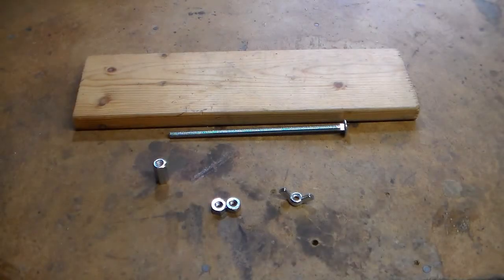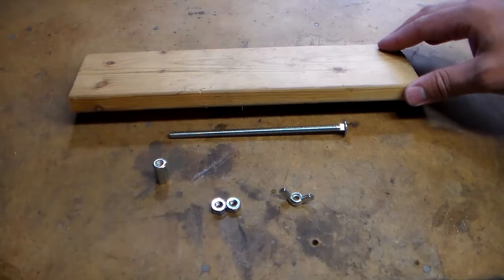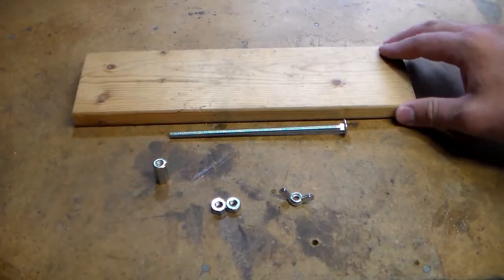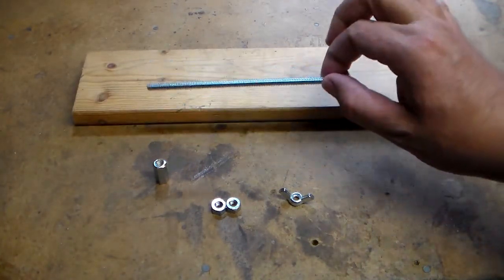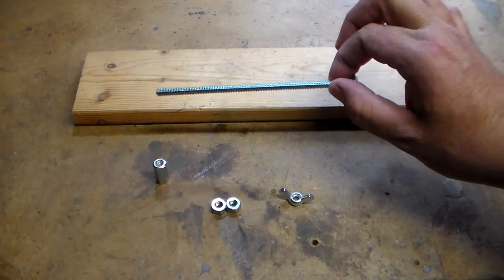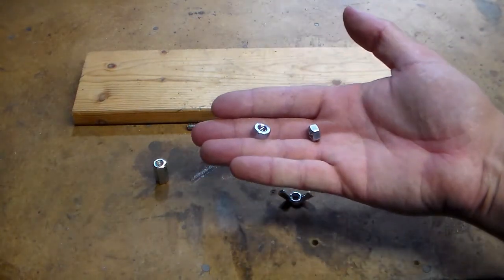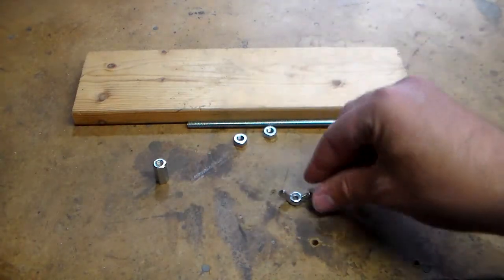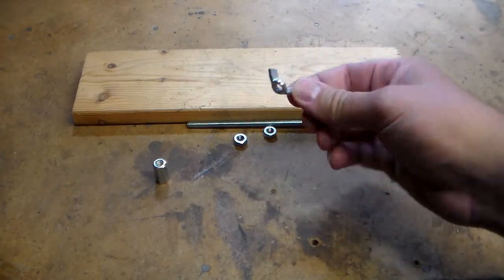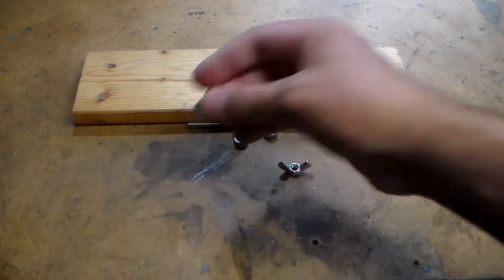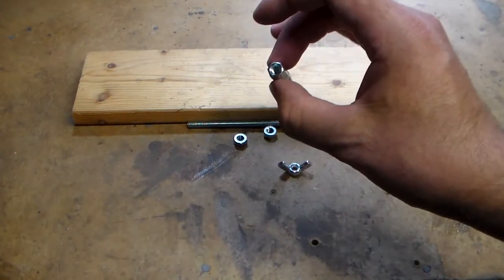For today's project you're going to need the following materials. We need a scrap piece of wood, this is just a 1x4 that I had lying around, a 6 inch by quarter by 20 carriage bolt, 2 quarter by 20 nuts, a 1 quarter by 20 wing nut, and a quarter by 20 coupler.